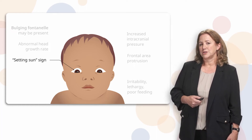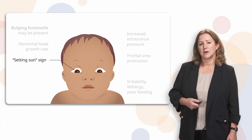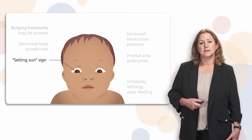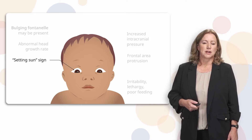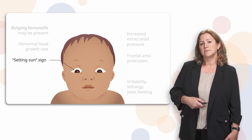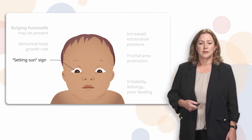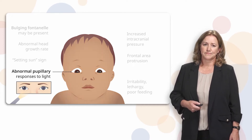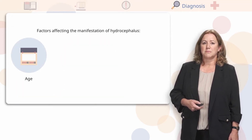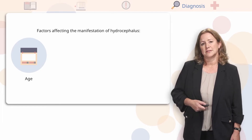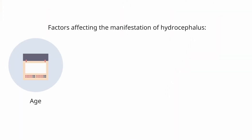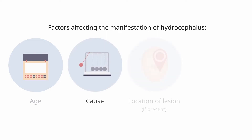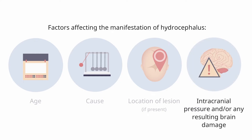Increased intracranial pressure might cause the eyes to actually rotate down — we call that a setting sun sign. It's more common in infants and young infants; it looks as if they're trying to look at their lower eyelids, and you see more of the white than you normally should. The pupils may also be sluggish and unequal in response to light. The manifestations of hydrocephalus in a child or infant depend on several factors, such as their age, the cause of it, the location of the lesion in the brain, the degree of increased intracranial pressure, and any resulting brain damage.